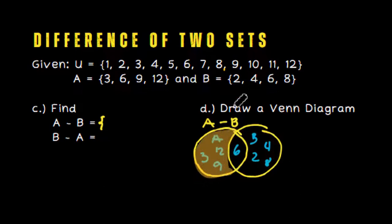We didn't include 6. Why? Because 6 is part of B, an element of B. So the answer is 3, 9, and 12. A minus B consists of the elements 3, 9, and 12. This is the final answer.